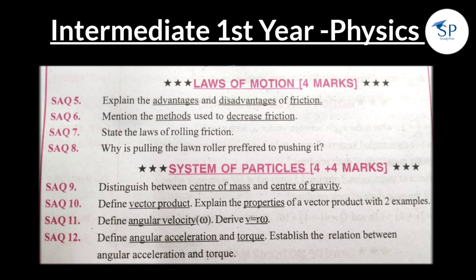Next, Laws of Motion — there are 4 questions. Explain the advantages and disadvantages of friction. Mention the methods used to decrease friction. State the laws of rolling friction. And why is pulling a lawn roller preferred over pushing it? Total 4 very important questions.